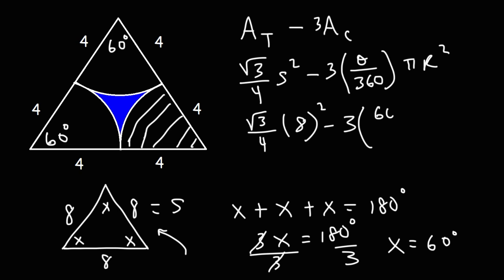We're going to replace theta with 60 divided by 360 degrees and then multiply by pi times the square of the radius. The radius of each circle that's inside of the triangle is 4. So this is going to be pi times 4 squared.